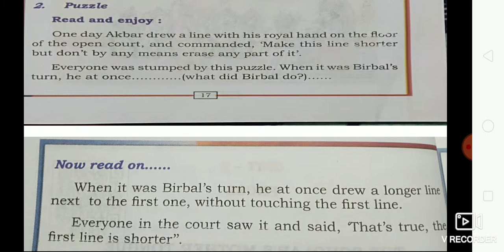I will read first; all of you look at the textbook. Read and enjoy: one day, Akbar drew a line with his royal hand on the floor of the open court and commanded, 'Make this line shorter, but don't by any means erase any part of it.' Everyone was stumped by this puzzle. When it was Birbal's turn, he at once — what did Birbal do? You should think about what Birbal did.